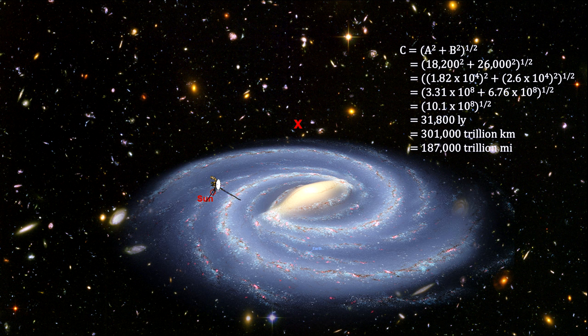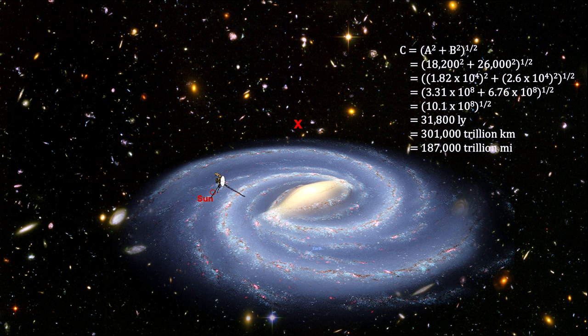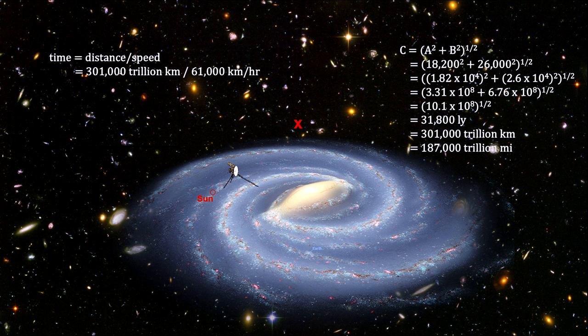Voyager 1 left on its journey in 1977 and is traveling at 61,000 kilometers per hour, or 38,000 miles per hour. It has already gone 21.2 billion kilometers, or 13.2 billion miles. If we aim it at the photographic point at its current velocity,